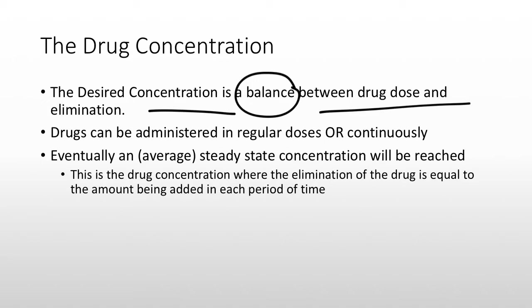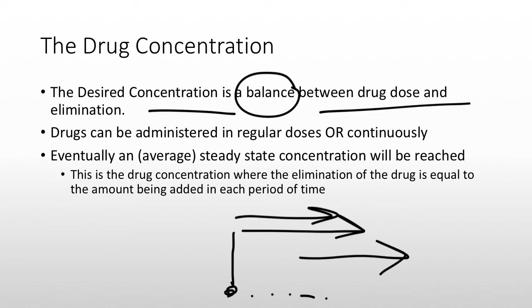How fast a drug is taken out of your body is almost always going to be concentration dependent. If you have a low concentration of the drug, it's going to move out very slowly. As the concentration gets higher, it's going to start moving out faster and faster. This means that eventually, as you increase your dose, the elimination is going to match what is brought in — so the concentration remains steady. As long as you are administering the exact same amount at the exact same intervals, you will eventually get to a steady state concentration.